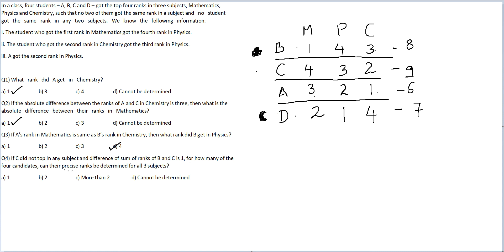For how many of the four candidates can the precise ranks be determined for all three subjects? We can get the precise ranks for all four people. Therefore, the answer to this question is option C more than 2. A fairly straightforward question. All you need to do is record the data appropriately.